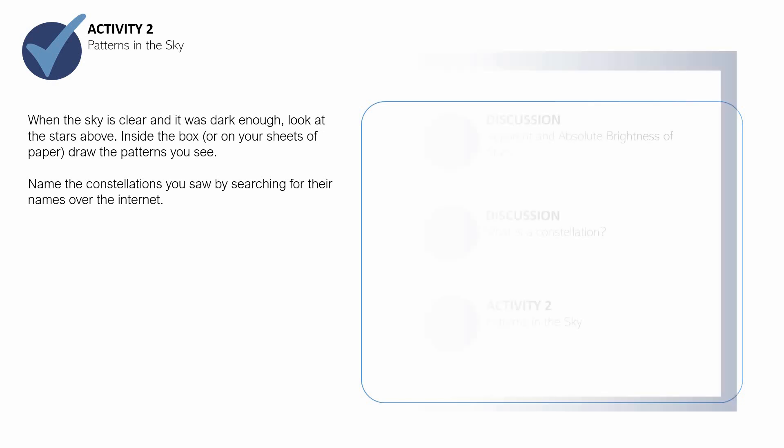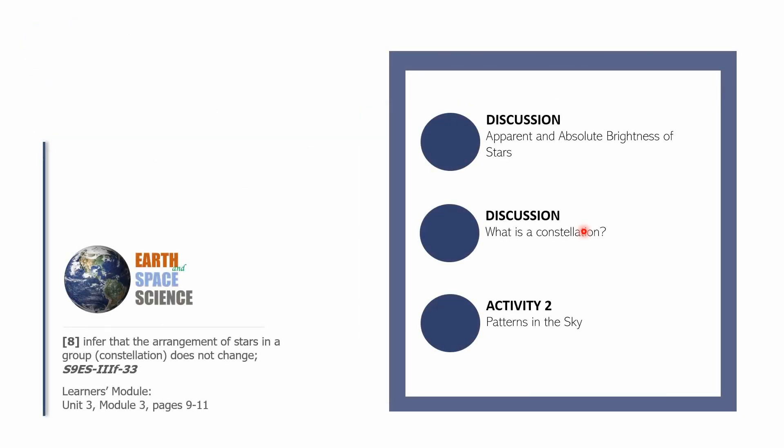You were able to finish the following parts: a discussion on apparent and absolute brightness of stars, a discussion on what are constellations, and an activity, Activity number two, patterns in the sky. We are through with this learning competency, inferring that the arrangement of stars in a group or constellation does not change. As you may have seen, ancient Greeks have observed Orion. But that arrangement of those stars that makes up Orion is still around up to this day. Ancient Greeks. Sobrang daming days, sobrang daming years na nakalipas. Pero the same constellation is still around. It did not change.